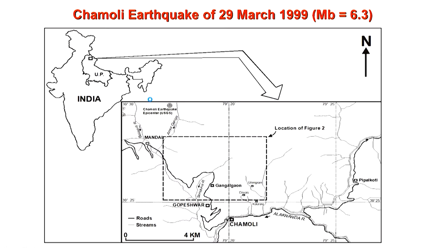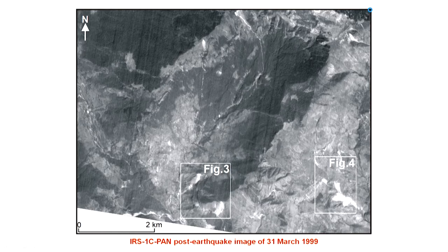Now I am going to take one example of co-seismic landslides which occurred during the 29th March 1999 earthquake, also known as the Chamoli earthquake. It had a magnitude of 6.3 and occurred in Uttarakhand. What we are going to see here is a satellite image and its interpretation. There are a few patches visible and I will show the enlarged parts of two marked boxes, along with a few more landslides in this area.